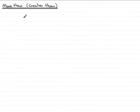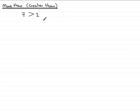The first inequality we're going to consider is the more than, or greater than, symbol. It looks like an arrow pointing to the right. For instance, I could say that 7 is more than 2, or 17 is more than 2, and so on.